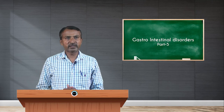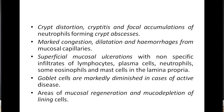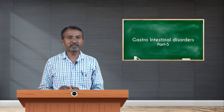Histologically, there will be cryptitis and focal accumulations of neutrophils forming crypt abscesses, marked congestion, dilatation, and hemorrhage from mucosal capillaries. There is superficial mucosal ulceration with non-specific infiltrates of lymphocytes, plasma cells, neutrophils, some eosinophils, and mast cells in the lamina propria. Goblet cells are markedly diminished in cases of active disease, with areas of mucosal regeneration and mucin depletion of lining cells.